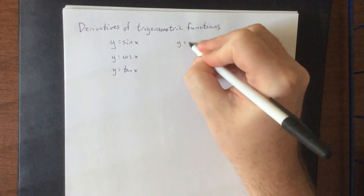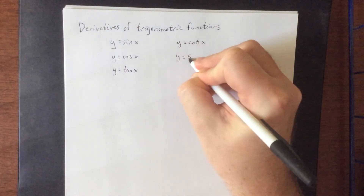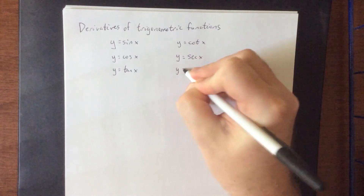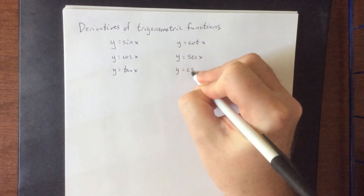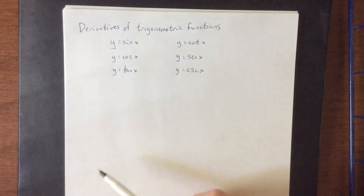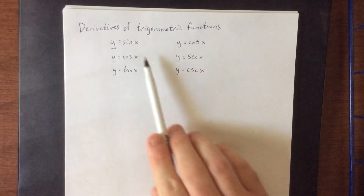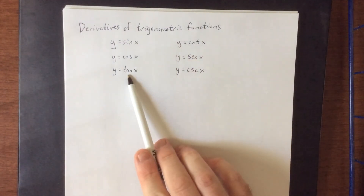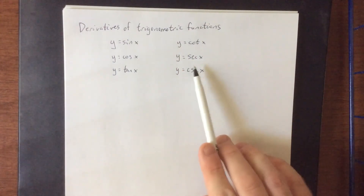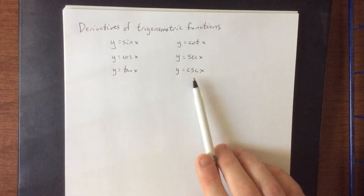As a reminder of what the six trigonometric functions are — writing them out now in a very particular order — those six trigonometric functions are: the sine function, the cosine function, the tangent function, the cotangent function, the secant function, and the cosecant function.